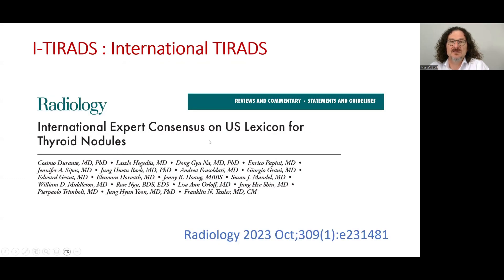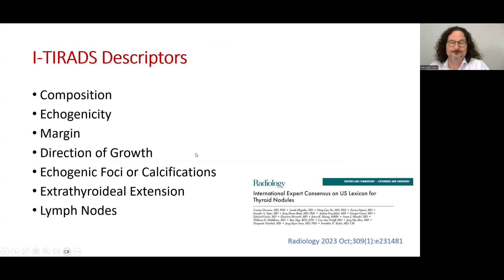I will use this review as a guide with my own examples. The ATTA guideline descriptors include the composition, echogenicity, margin, direction of growth, echogenic foci classifications, extrathyroidal extension, and the lymph nodes.